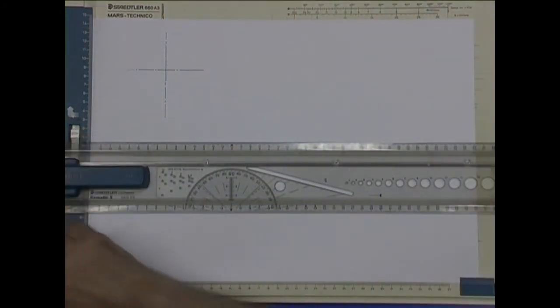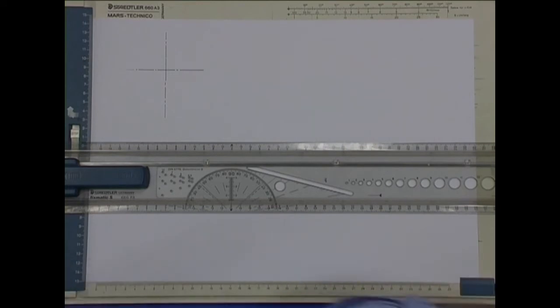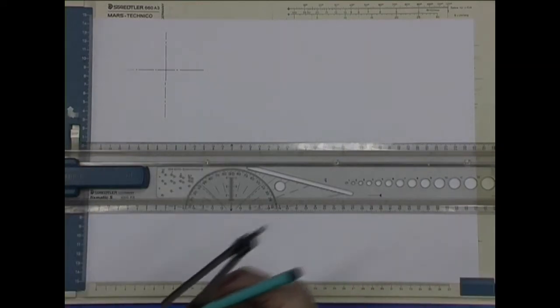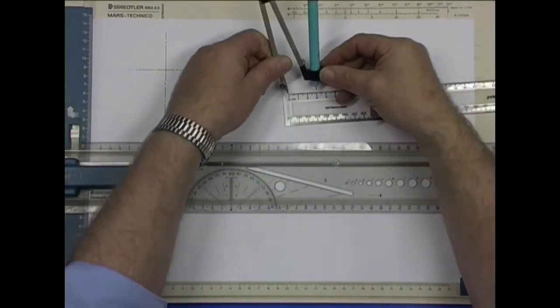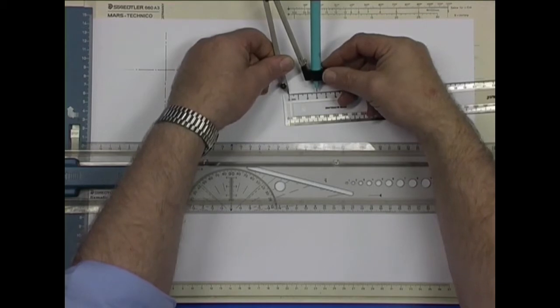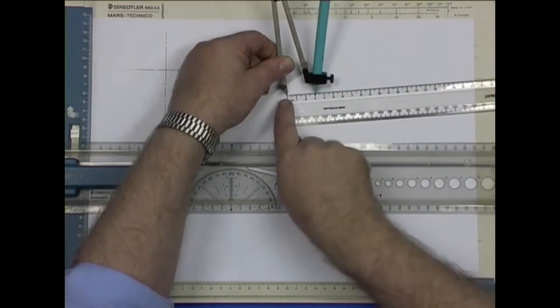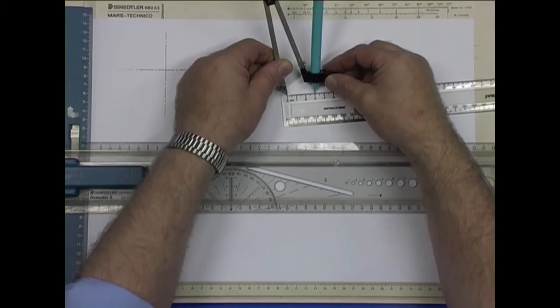I'm going to draw a 60mm diameter circle. So that means I set my compass at the radius which is half of that. Half of 60 is 30. Start putting the compass almost flat, that way you can see it more accurately. Set it at the 30.